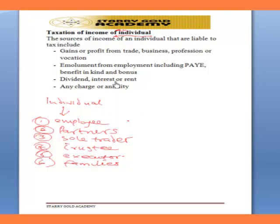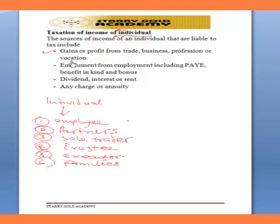They are liable to tax on their income. What makes up their income? What is the source of income? For the sources of income of an individual, we have gains or profit from trade, business, profession or vocation.